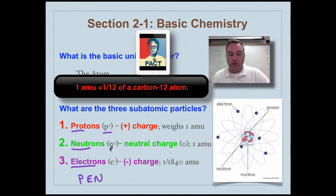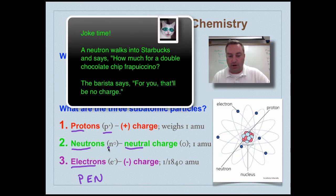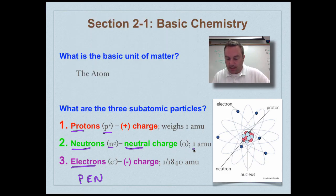Neutrons, n0 - these guys have a neutral charge. Look at the first five letters and those are the same five letters in neutron, so think of neutron equals neutral charge or you could say they have no charge. They also weigh one atomic mass unit.